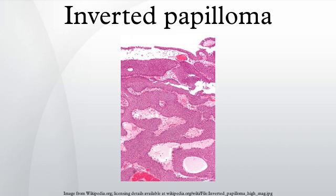An inverted papilloma is a type of tumor in which surface epithelial cells grow downward into the underlying supportive tissue. It may occur in the nose and/or sinuses, or in the urinary tract.